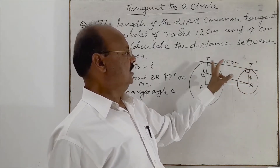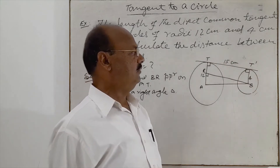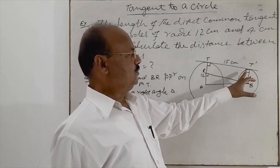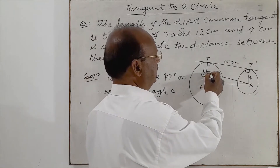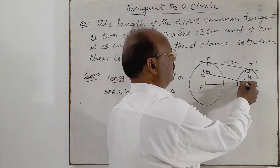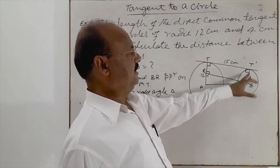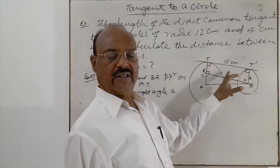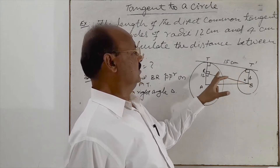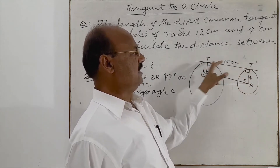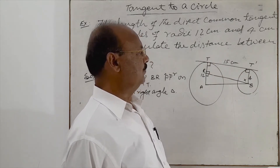BT' is the radius and TT' is the tangent, so the tangent is perpendicular to the radius at the point of contact. So if these two angles are 90 degrees, and we have also drawn the perpendicular BR here making this angle 90 degrees as well, then the fourth angle will automatically be 90 degrees. So TRB T' is a rectangle because all four angles are 90 degrees, and the length of opposite sides will be equal.